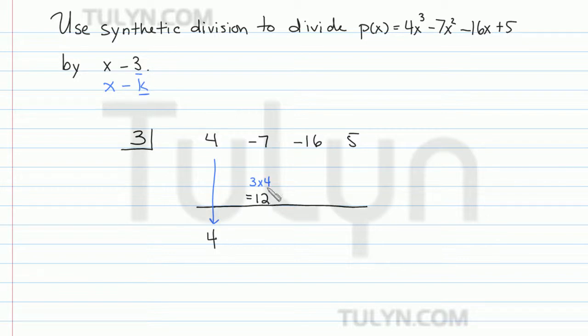Then the next thing we do is add negative 7 and 12 to get positive 5. Now we do the same thing again. We multiply the 3 by the 5, and we write this down here. So when we do 3 times 5 here, we're going to get 15. Then we want to combine these two. Negative 16 plus 15 is negative 1.